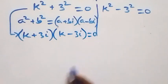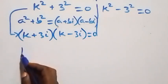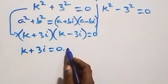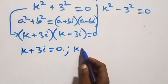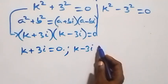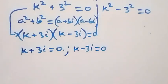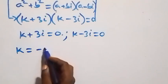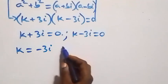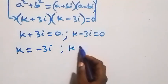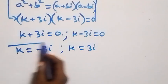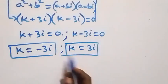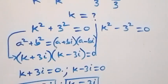Equals zero. So we have two cases: k plus 3i equals zero, or k minus 3i equals zero. Which implies k equals minus 3i, and k equals 3i. So here we have two complex solutions.